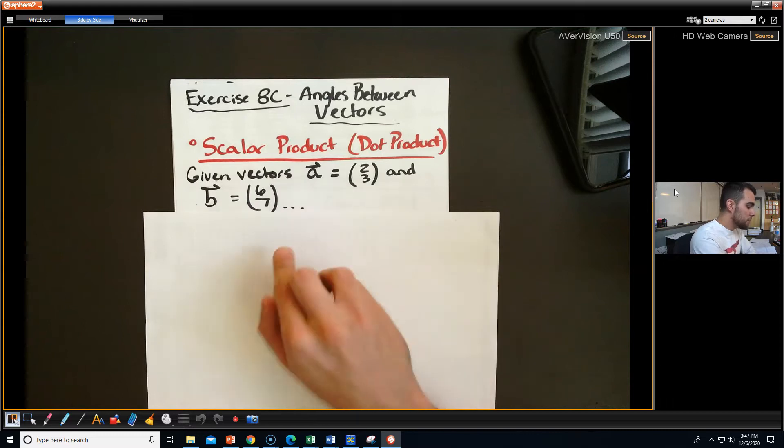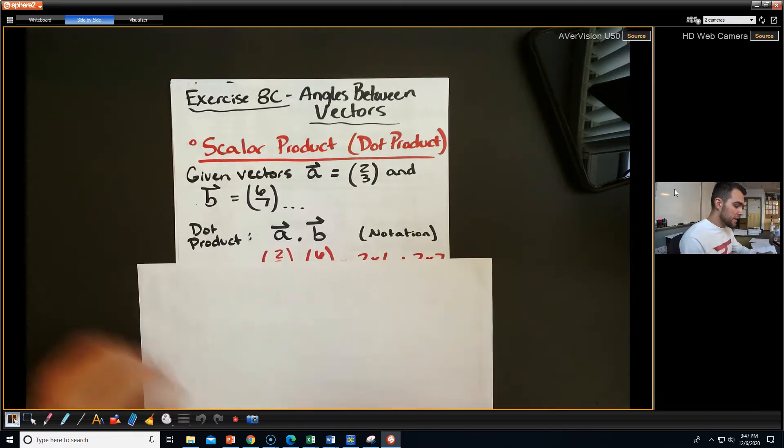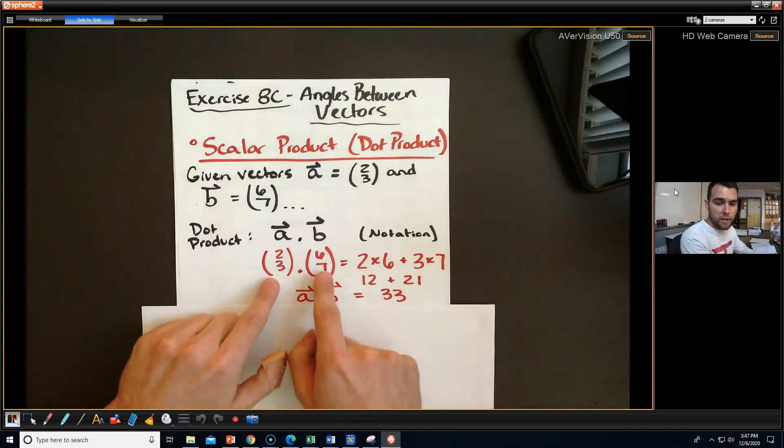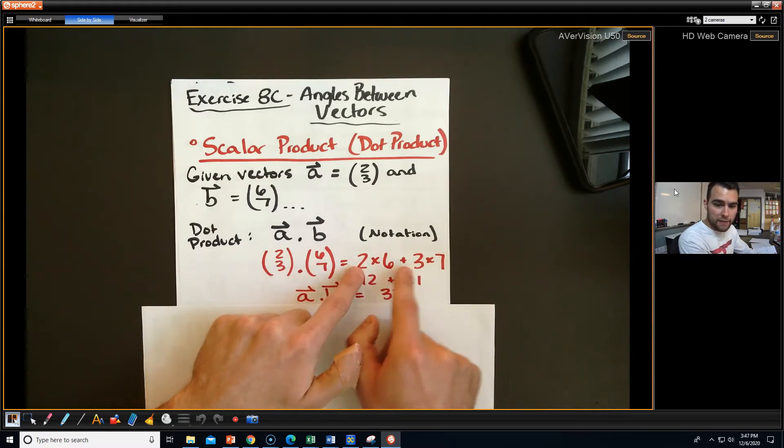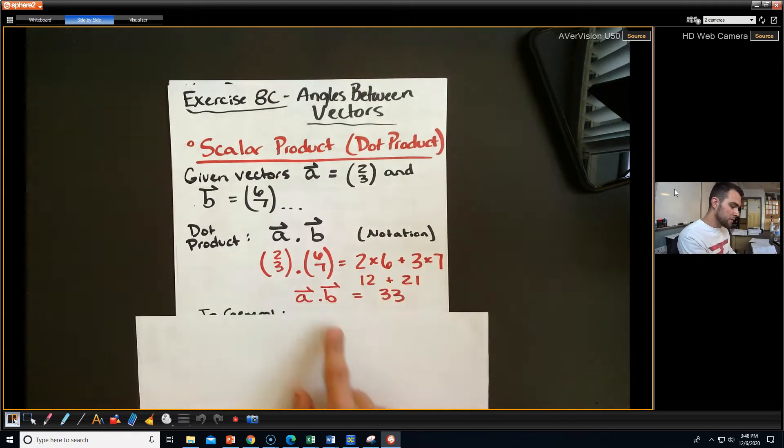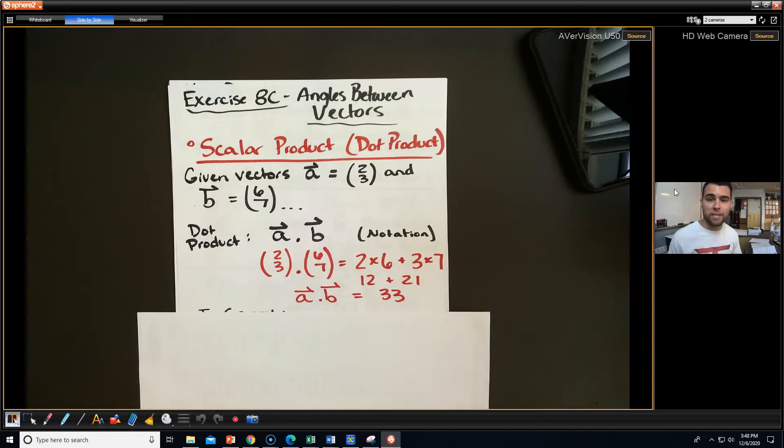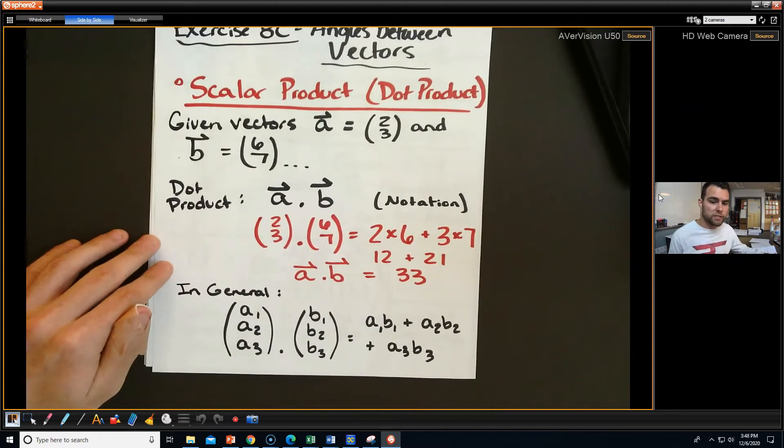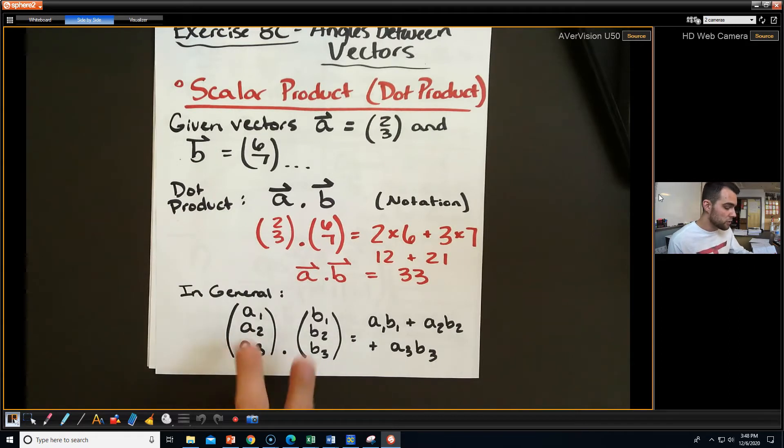If we're given vectors A and B, then the dot product can be written like this in notation. It's basically like the multiplication symbol, but just kind of down here. You take both those vectors, and essentially you're taking the i components and multiplying them, and then you're going to add that to the j components and multiply them together. Once you do that, you add them up, and this is how you get your scalar product.